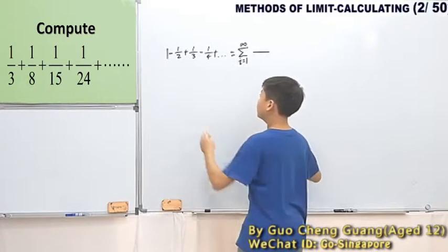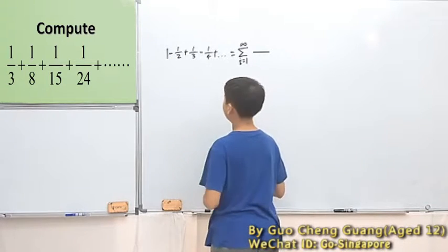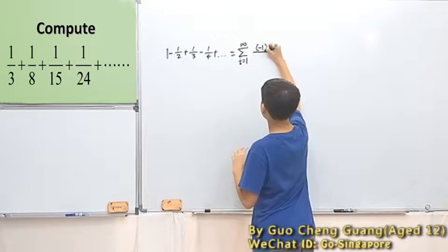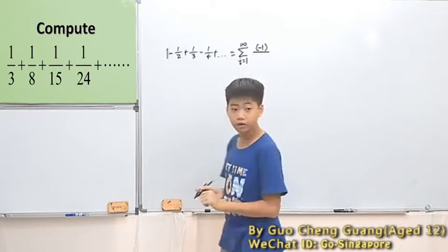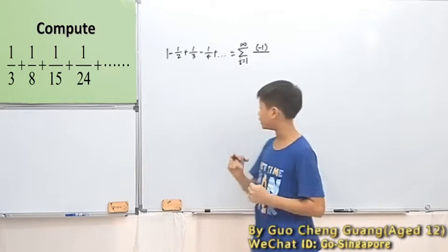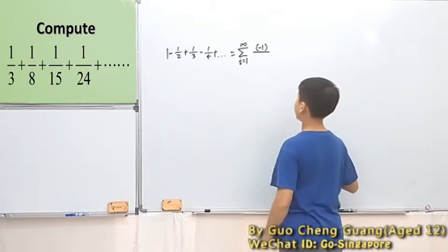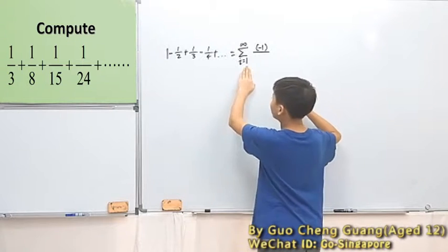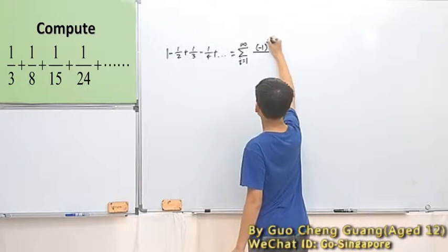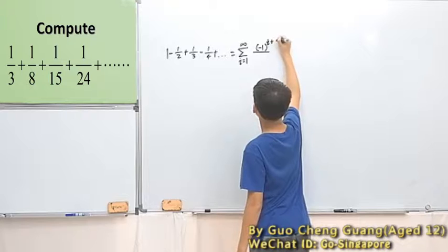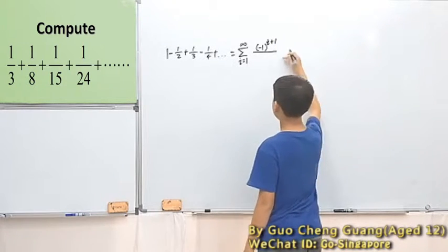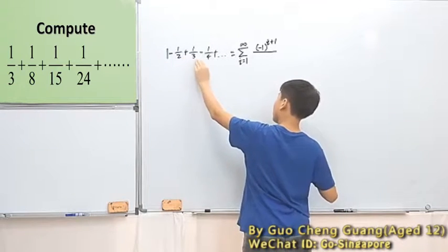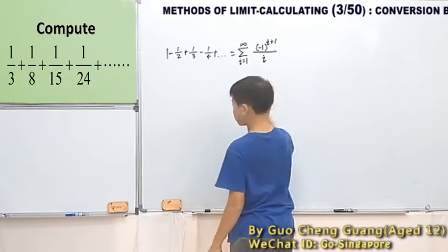We have negative, we have positive. So with this alternating negative and positive, we'll have a negative 1 raised to some power. Because it keeps on changing, it's definitely changing with this i. The first term, i is 1, but this is positive. So it is i plus 1. Over here, the denominator is just 1, 2, 3, 4, and so on — so it's i.